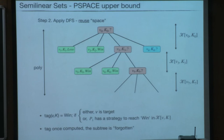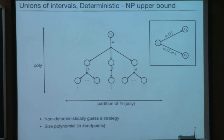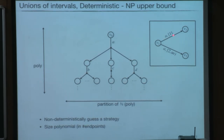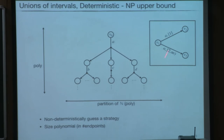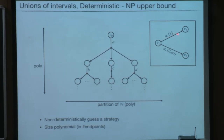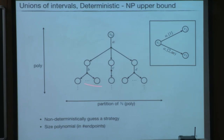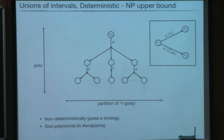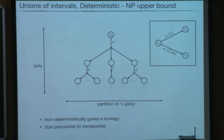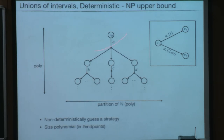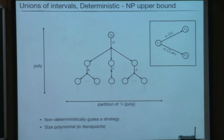For unions of intervals in the deterministic case, we can show NP membership: deterministic means the sets form a partition of the natural numbers, so player 1 can guess a strategy of polynomial size — because at every step the partition uses only the endpoints given in the input, giving polynomial width and polynomial height, hence polynomial tree size. We also have hardness proofs by reduction from SAT, though I am not showing them here.